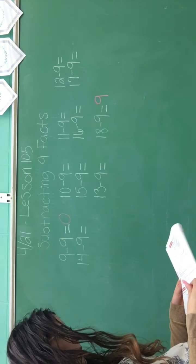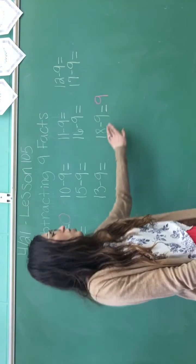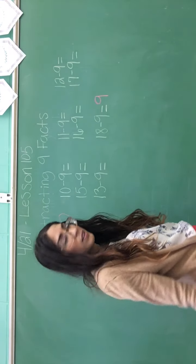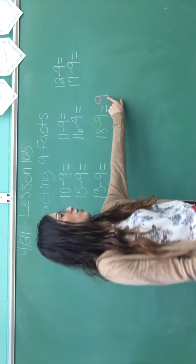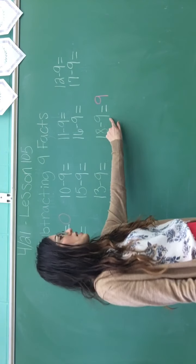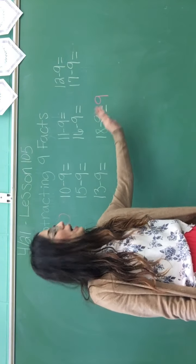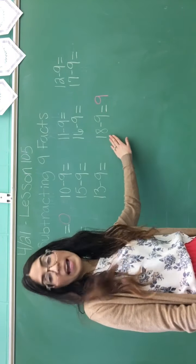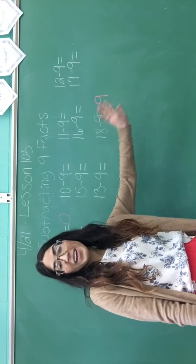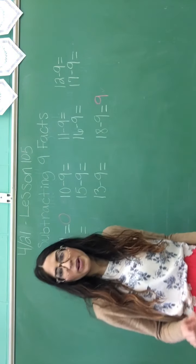Now, the next one is how can we check this answer? Do you know how we can check that answer to see if it's right? Does anyone remember? So we're going to add the answer plus this number next to it. So nine plus nine, does that equal 18? Yes, it does. So nine plus nine equals 18. So now we know our answer is right. So we're going to put a little check mark because we know it is correct.